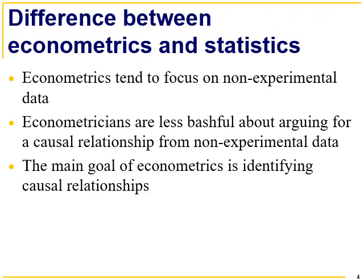What's the difference between econometrics and statistics? Econometrics tends to focus on non-experimental data, while statistics would hope to focus on experimental data. Econometricians are less bashful about arguing for a causal relationship from non-experimental data, whereas statisticians virtually never claim a causal relationship. The main goal of econometrics is identifying causal relationships.